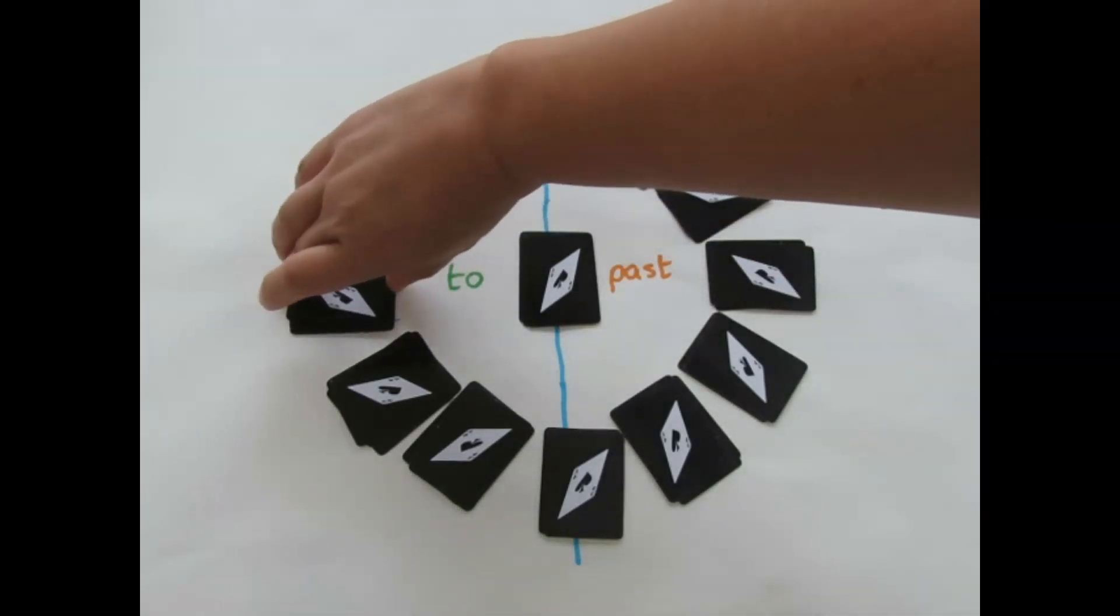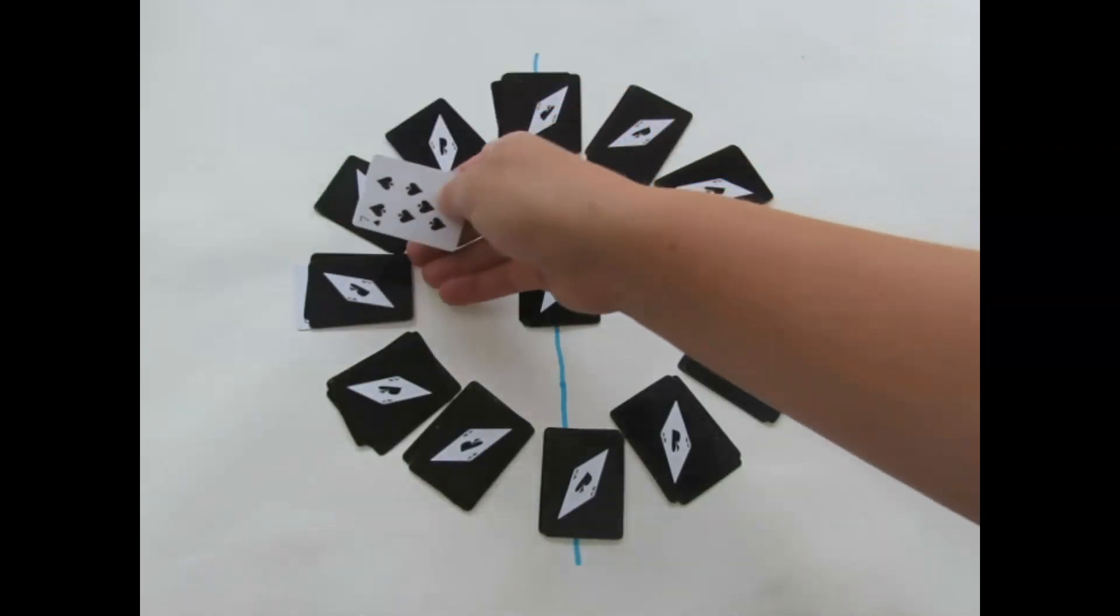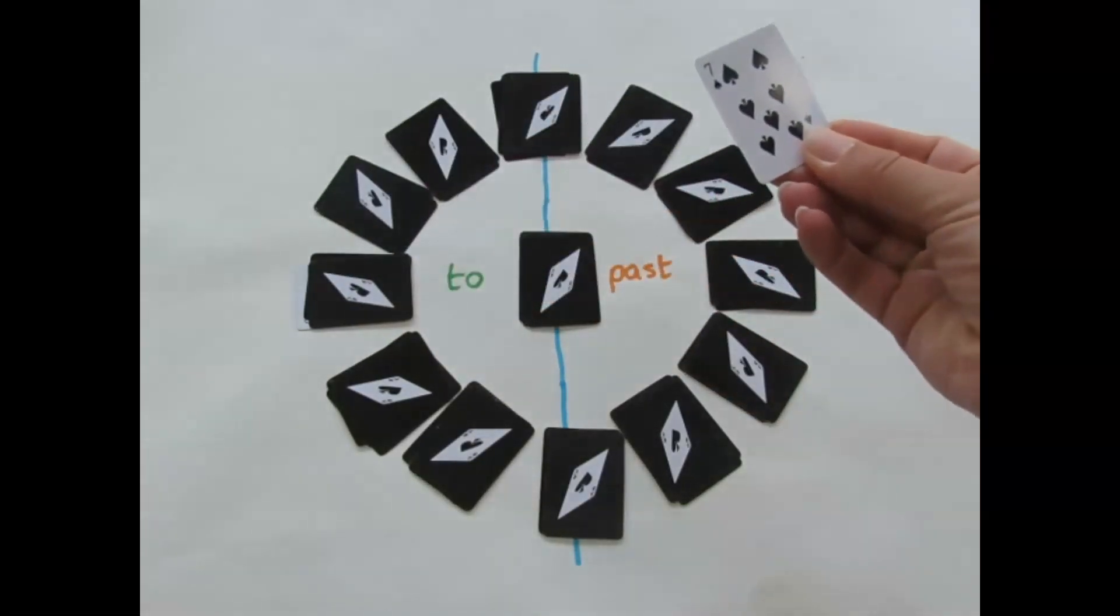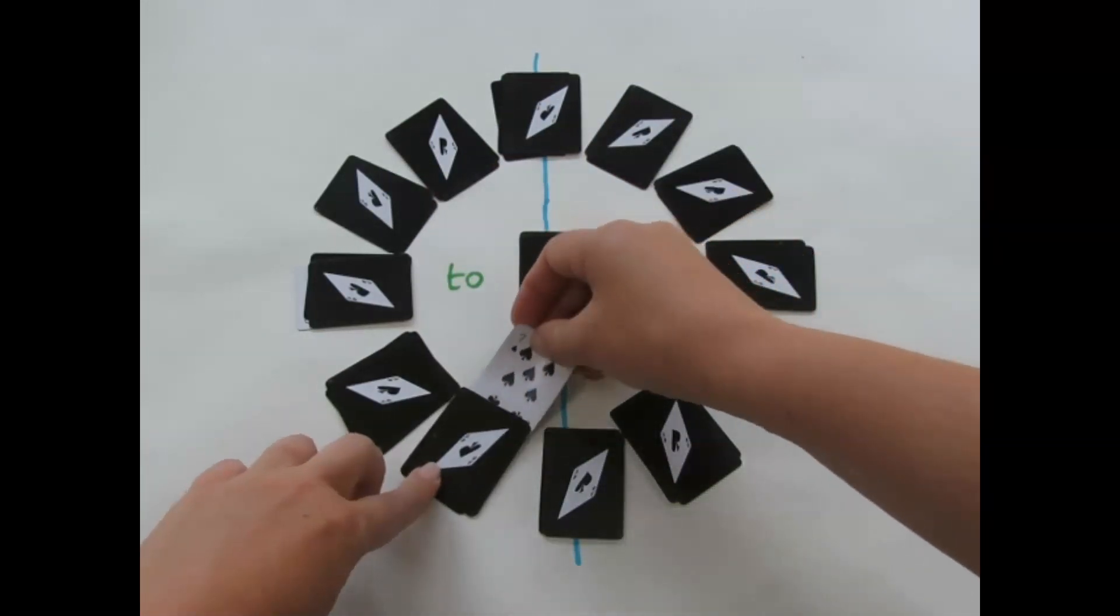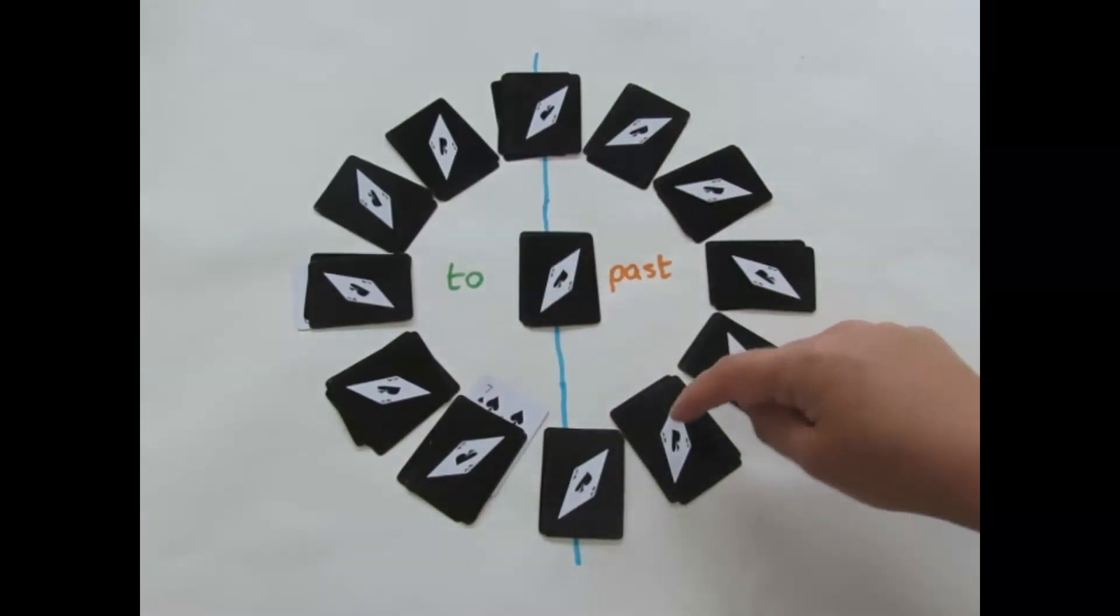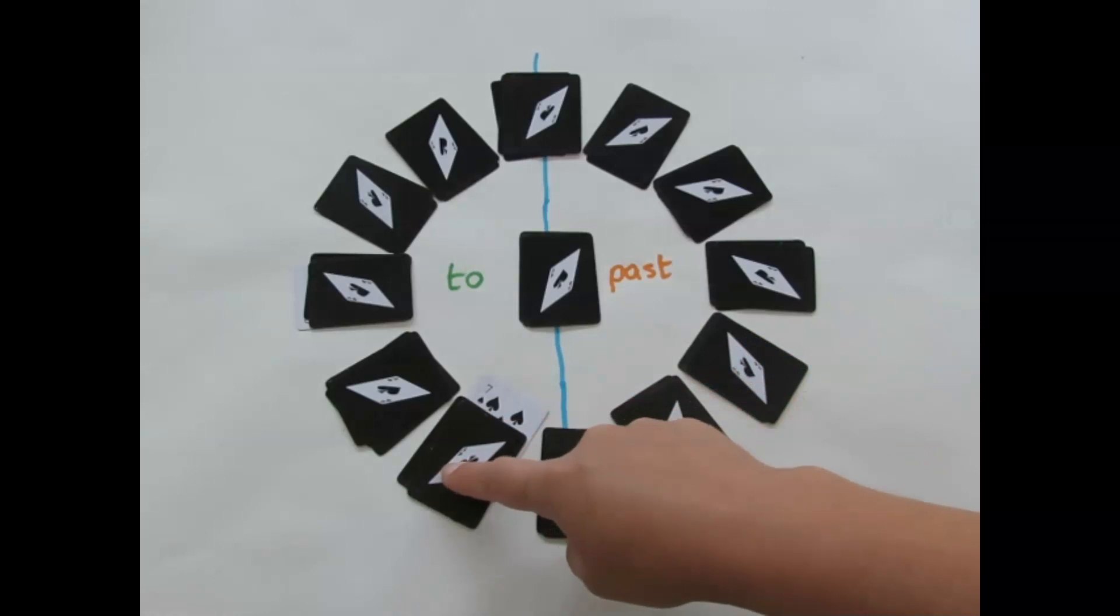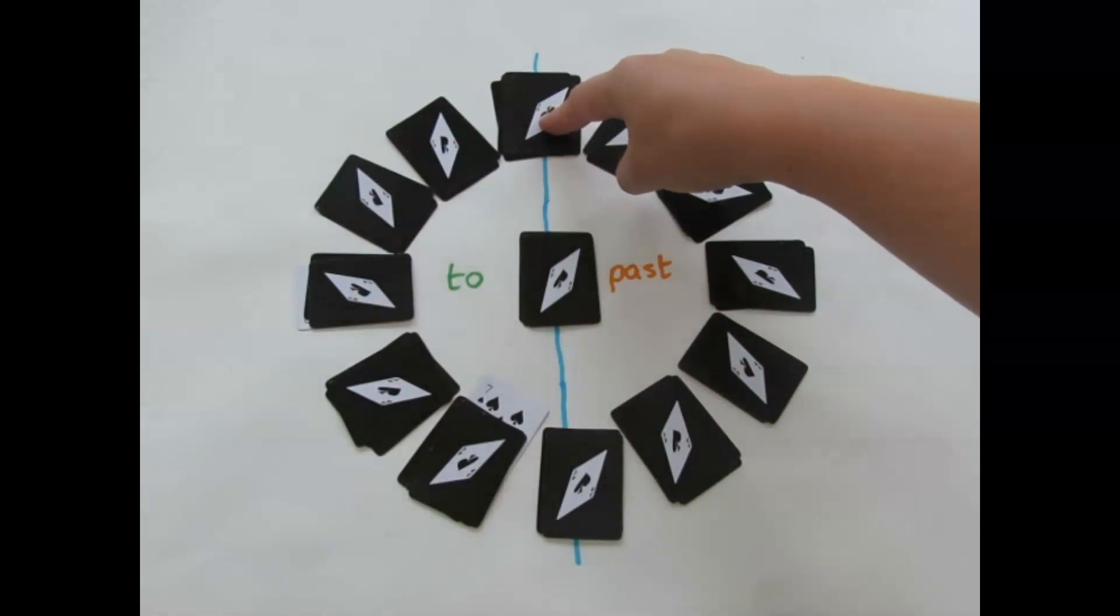So you place the nine at the bottom of the pile there and then you take the top one and that's your next card. So we've now got seven. Seven goes here on our clock face. Again we can work out that that is 5, 10, 15, 20, 25, 30, 35 minutes past. And then it is 5, 10, 15, 20, 25 minutes too.